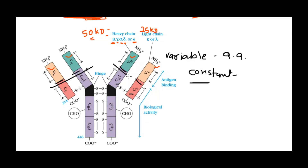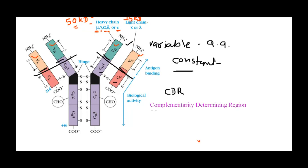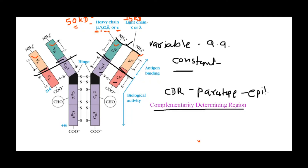The variable region is where the antigen-binding site resides. It is not the whole antibody that recognizes the antigen — only specific amino acid sequences within the variable region do so. Those specific amino acid sequences are called CDR, which stands for Complementarity Determining Region. This CDR is also called the paratope of the antibody. The paratope binds to the epitope of the antigen.